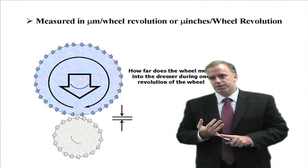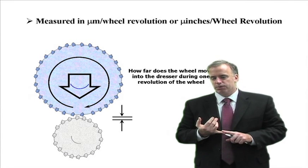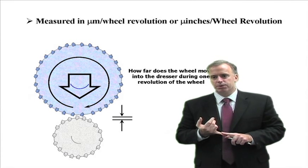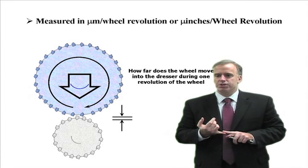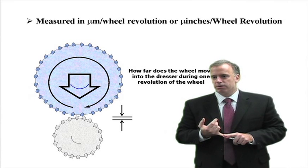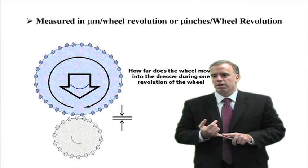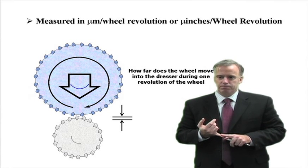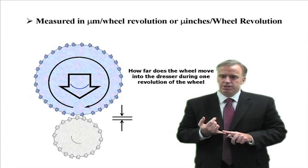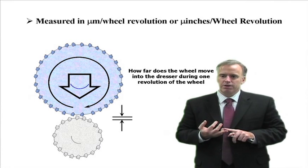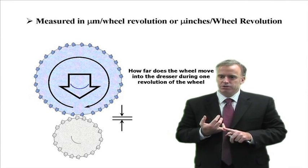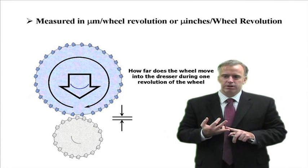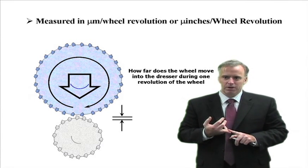One of the dilemmas is if we plunge in very fast, we have a sharp wheel but we consume our wheel. Grinders using continuous dress often plunge in at an extremely low speed to save wheel consumption. That's a problem because instead of continuously dressing your wheel to make it sharp, you continuously dress your wheel and make it dull. Instead of continuous dress grinding, you might call it continuous dulling grinding.